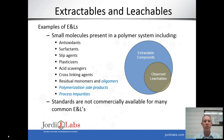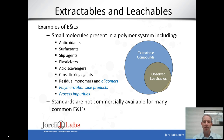I always like to begin when speaking about extractables and leachables by describing what they are. Extractables include a very wide variety of materials which can be leached out of a polymer system, including things like antioxidants, surfactants, slip agents, plasticizers, acid scavengers, cross-linking agents, as well as three very important classes which include oligomers, polymerization side products, and process impurities.